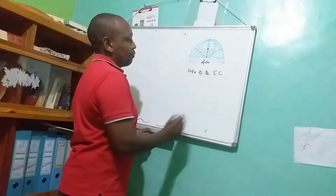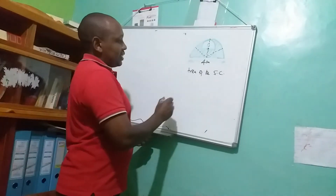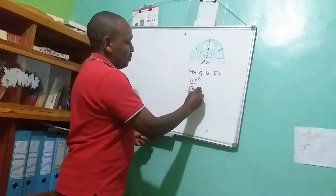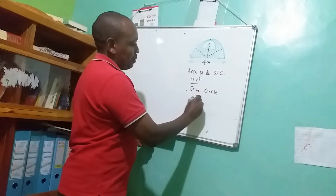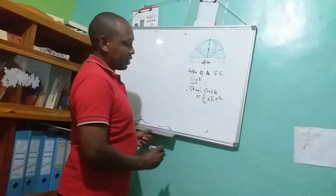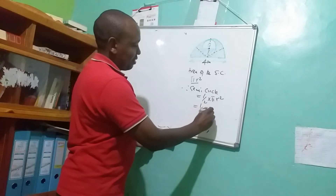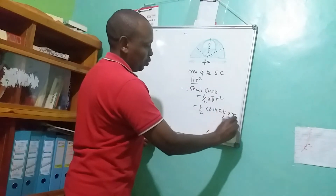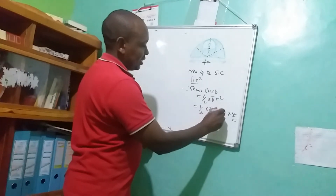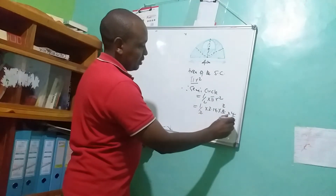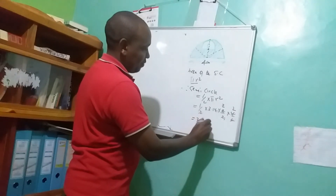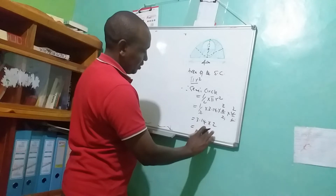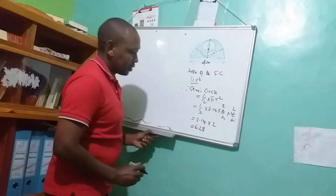We are going to find the area of the semicircle. The area of a circle is given by pi r squared, therefore the area of a semicircle is given by half multiplied by pi r squared. This gives us half multiplied by 3.14 multiplied by the radius squared. The radius is 4 over 2, since the diameter is 4. Simplifying gives us 3.14 multiplied by 2.